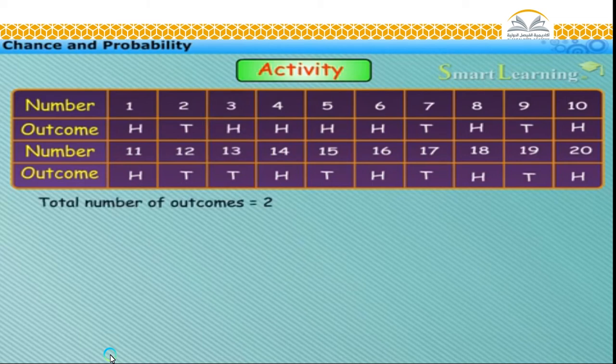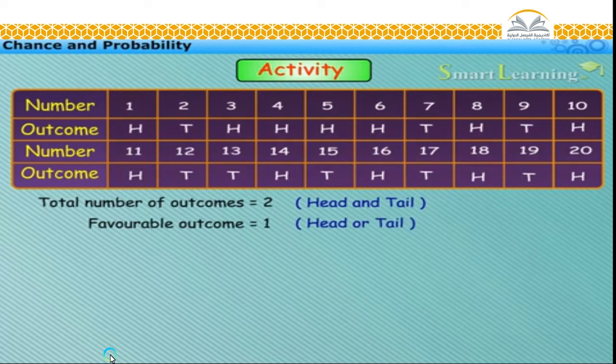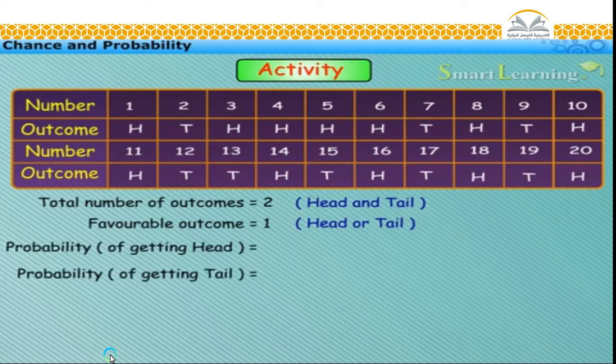This means total number of outcomes are two: head and tail, out of which favorable outcome is only one, that is, getting head or tail. And thus, the probability of getting head or tail is equal to one upon two for each.